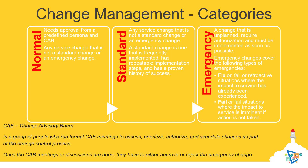What is CAB? Well, it stands for Change Advisory Board and is basically a group of persons working together to analyze all possible risks in case the change will be implemented. Once the CAB meetings or discussions are done, they have to either approve or reject the emergency change — as simple as that.